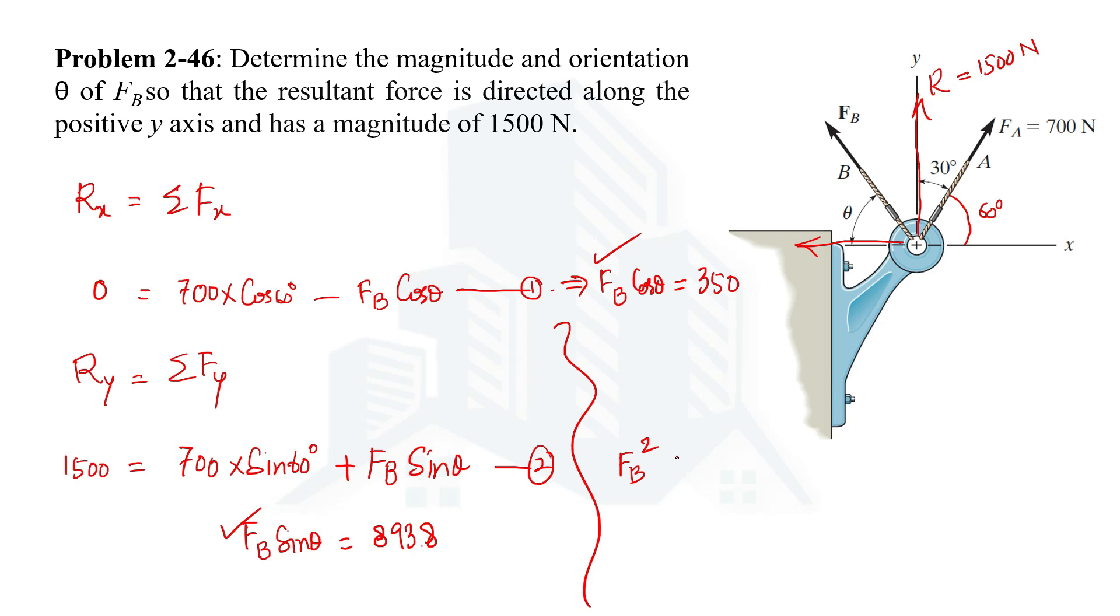Now squaring these two and adding them, we will be having Fb cos square theta plus Fb sin square theta. Squaring these two and adding them together we will be having 921378.44.